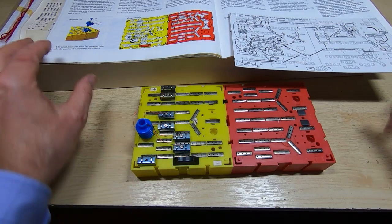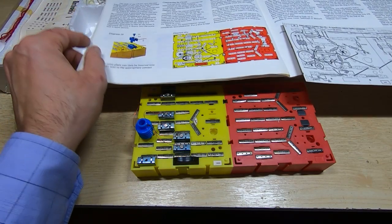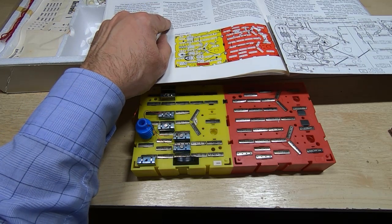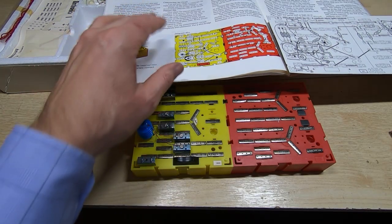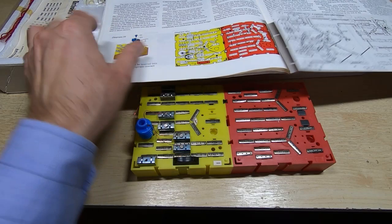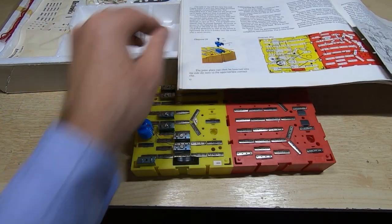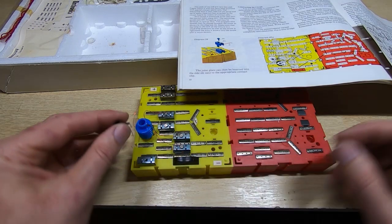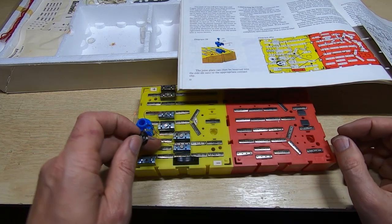We can now move on and start fitting some electronic components. Looking at the instructions, the next thing we have to fit apparently is the potentiometer, and it appears that goes in this position.